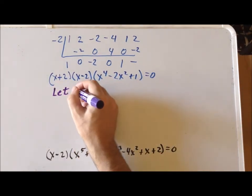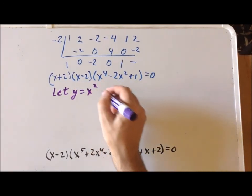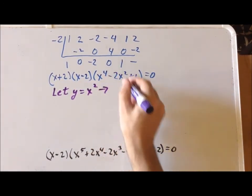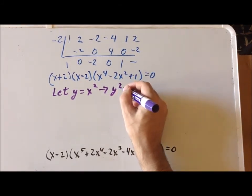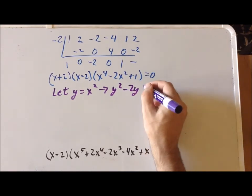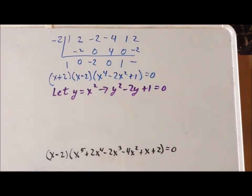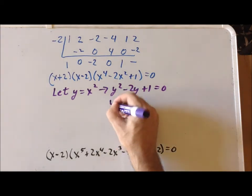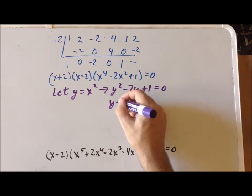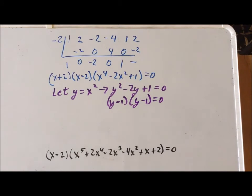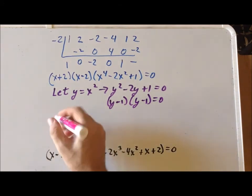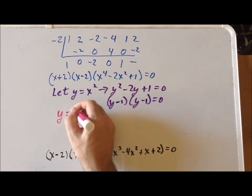Let y equal x squared. If we do that, it transforms this particular quartic polynomial into y squared minus 2y plus 1 equals 0. And this is a quadratic that we can factor on sight as y minus 1, y minus 1 equals 0. So this tells us that it has the root y equals 1 and y equals 1.